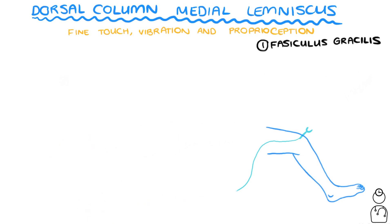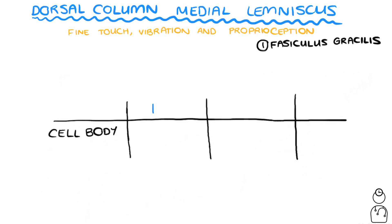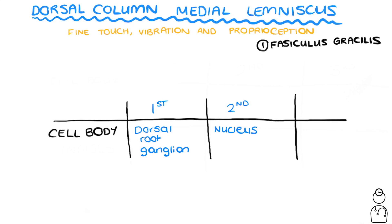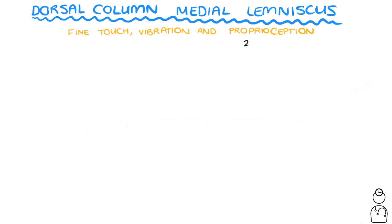A common exam question is stating where the cell bodies of each of these nerves are found. We know the first-order neurons have their cell bodies in the dorsal root ganglia. Second-order neuron cell bodies are found in the nucleus gracilis, and finally third-order neuron cell bodies are found in the VPL of the thalamus.